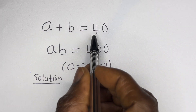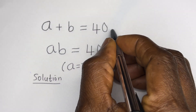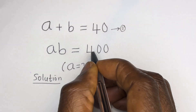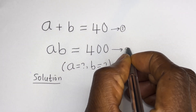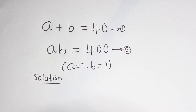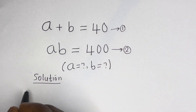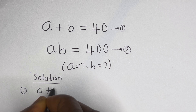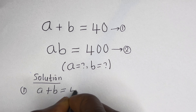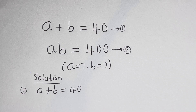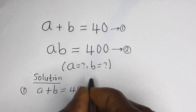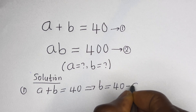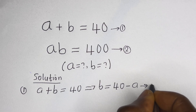A plus B is equal to 40 — let us call this equation 1. A times B is equal to 400 — let us call this equation 2. Then from equation 1, A plus B is equal to 40, so B is equal to 40 minus A. Let us call this equation 3.